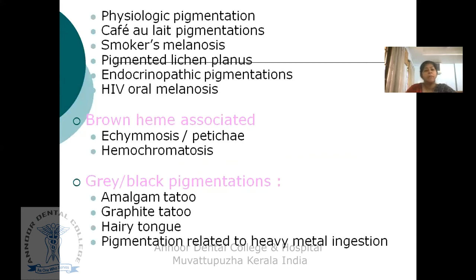Brown heme-associated lesions include ecchymosis, petechia, and hemochromatosis. Grey-black pigmentations include amalgam tattoo, graphite tattoo, hairy tongue, and pigmentation related to heavy metal ingestion.